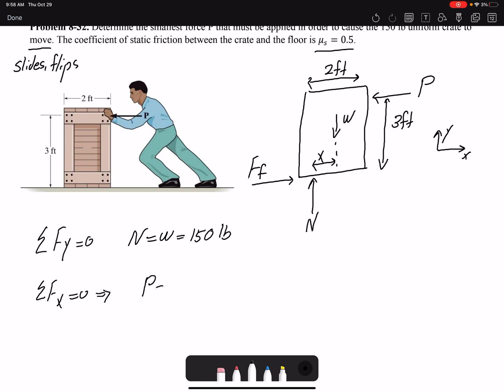That means that P should be equal to the friction force, or μN, which in this case 0.5 times 150, so 75 pound. So it takes 75 pound to slide the box. This is the force that it takes to slide the box on the floor.